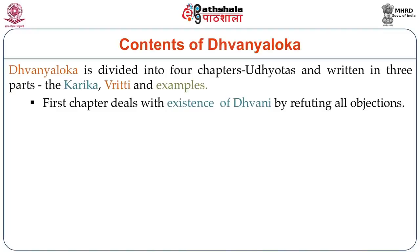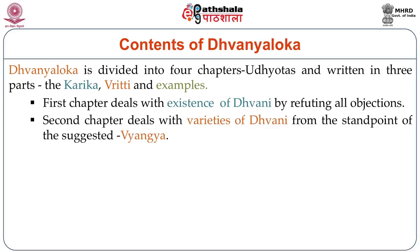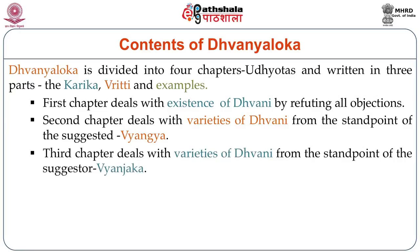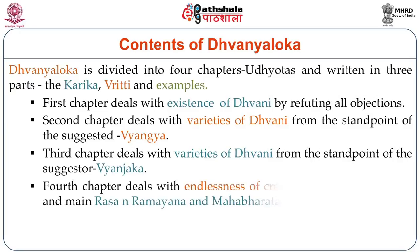In the first chapter of Dhvanyaloka, he establishes Dhvani by refuting all the objections and answering all the questions and doubts of anti-Dhvani scholars. The second chapter deals with the varieties of Dhvani from the standpoint of the suggested, Vyangya. The third chapter deals with the varieties of Dhvani from the standpoint of the suggestive, Vyanjaka. The fourth chapter deals with the endlessness of the creative imagination of the poet and the principal rasas in the Ramayana and Mahabharata.